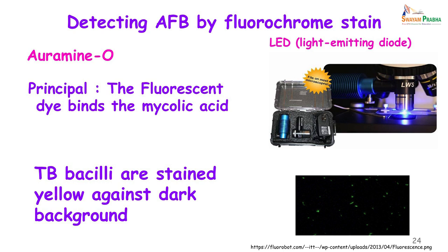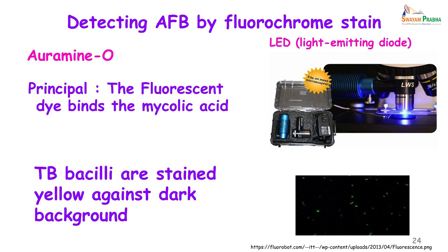If you want to hasten the process, you can detect AFB by fluorochrome stain — usually auramine O or the auramine-rhodamine combination — where the fluorescent dye binds to mycolic acid in Mycobacterium tuberculosis. The advantage is that you can look for bright yellow bacilli against a dark background under high power field, allowing you to see a larger area at one time. The fluorescent microscope is expensive (6 to 8 lakhs), so today it has been replaced by the light-emitting diode objective, which allows fluorescent smear examination without a dedicated fluorescent microscope.